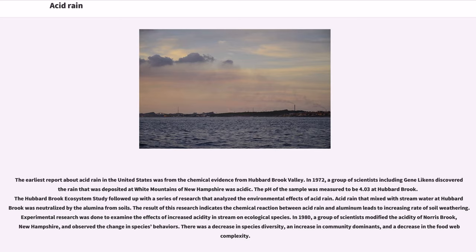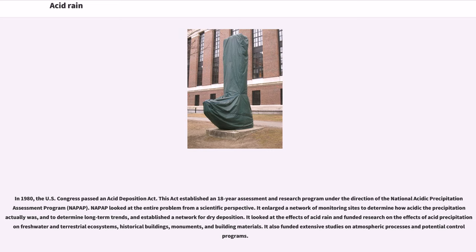In 1980, a group of scientists modified the acidity of Norris Brook, New Hampshire, and observed the change in species behaviors. There was a decrease in species diversity, an increase in community dominance, and a decrease in the food web complexity. In 1980, the U.S. Congress passed an acid deposition act. This act established an 18-year assessment and research program under the direction of the National Acidic Precipitation Assessment Program, NAPAP.